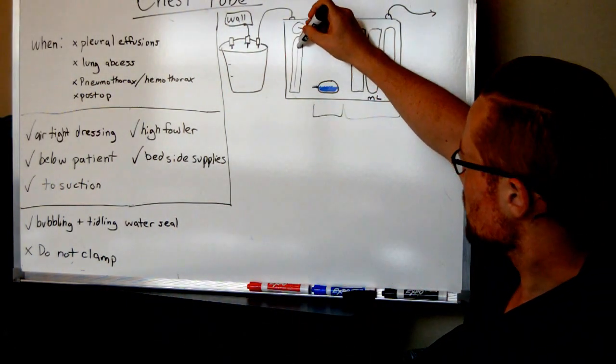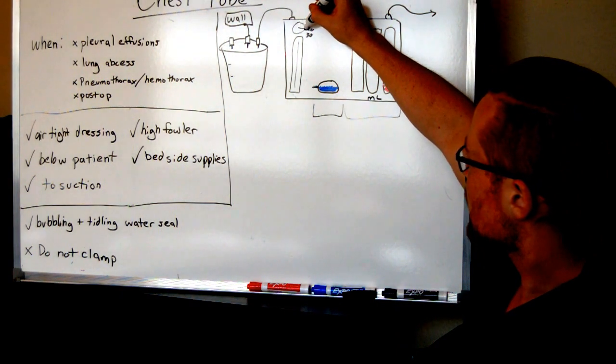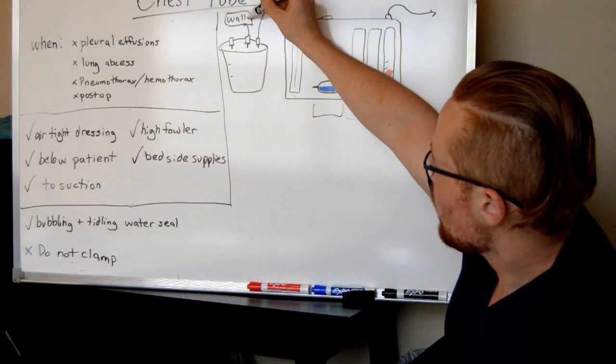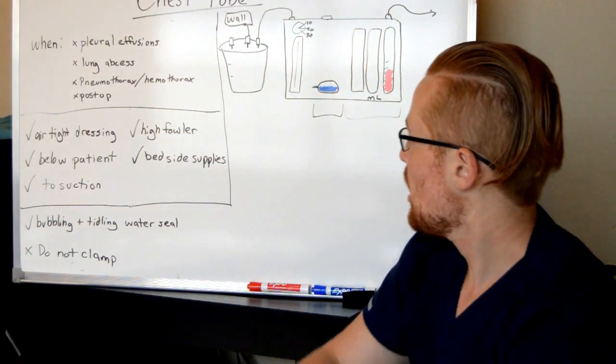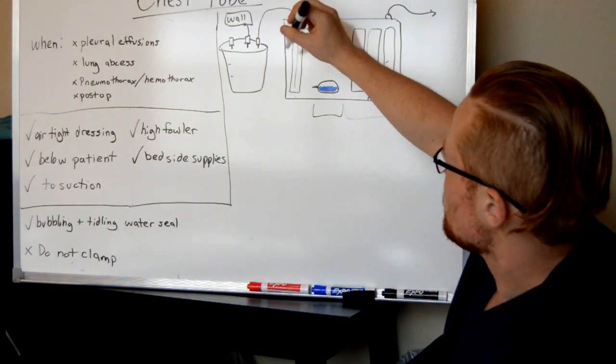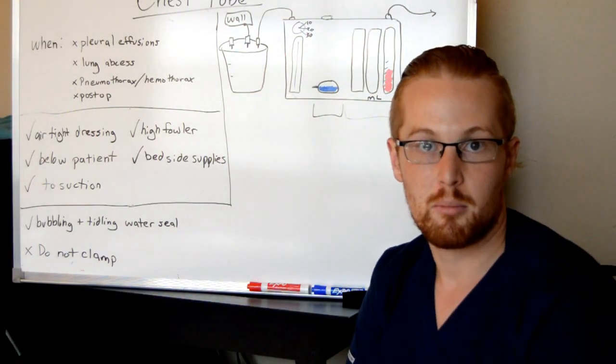And then here is the suction chamber, and typically there is a knob at the top that can adjust the level of suction. On the wall, you're just going to set it to a high continuous suction. And then here you can adjust the actual suction just based right on the chest tube box itself.